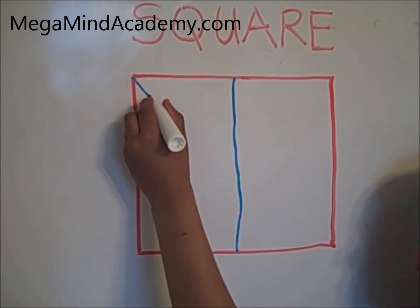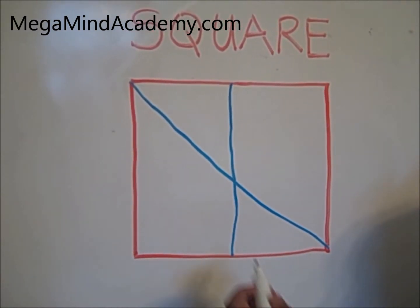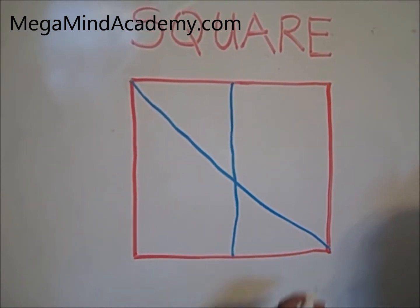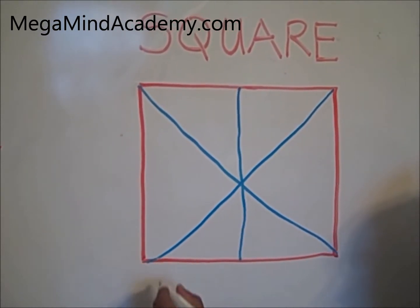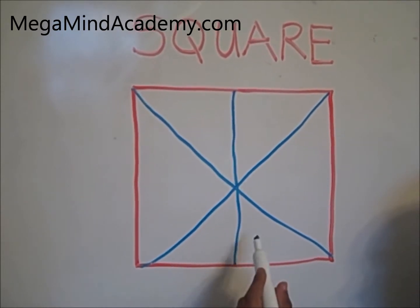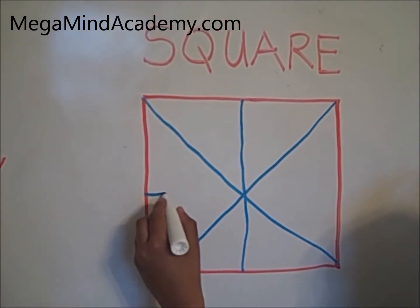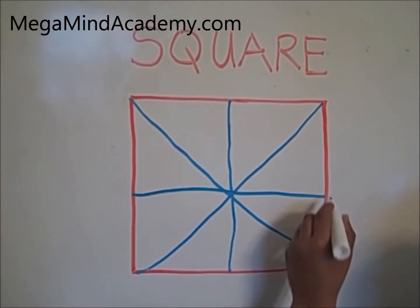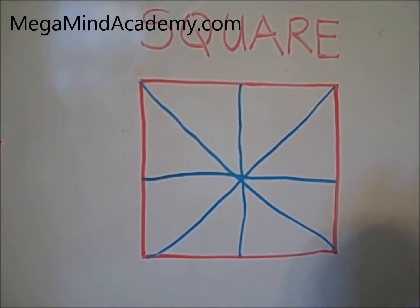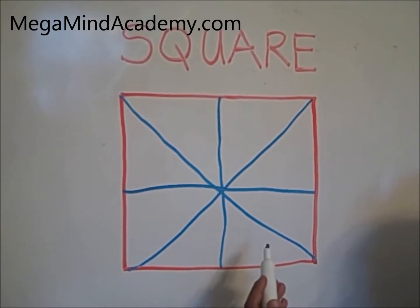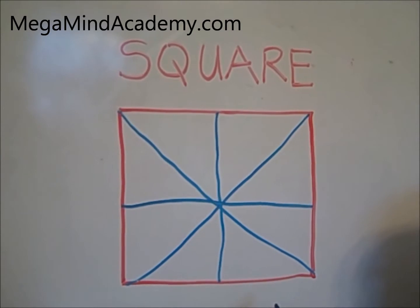This is another line of symmetry — it also divides the figure into two equal halves. This is another line of symmetry — it also divides the figure into two equal halves. This is the last line of symmetry — it divides the figure into two equal halves. All of these are lines of symmetry because they divided the square into two equal halves.